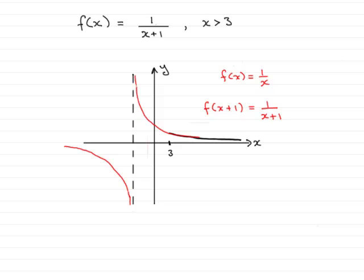So the range would in fact be the spread of y values from here to here. Now the lowest value is clearly going to be 0. It's not going to actually equal 0 because the graph does not cross the x-axis. So f of x has to be greater than 0, but it's got to be less than this top value here. So what is this top value? Well, all I need to do is find out what f of 3 would be. f of 3 turns out to be 1 over 3 plus 1, which is 1 over 4 — in other words, a quarter.